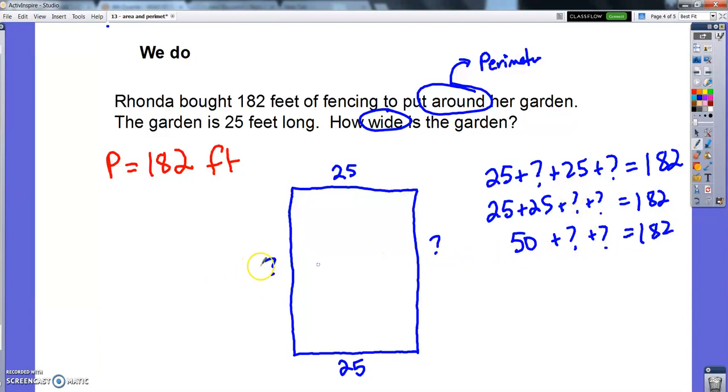And that helps me know that 50 plus the something plus the something is 182. Whatever that length is that I don't know, that's the length of the garden. So I get 50 from here and the rest of the 182 has to come from there. So let's see. If I'm going to make 50 and whatever this is add up to 182, 50 plus 100 is 150. 50 plus 130 is 180. So I think I need this together to be 132.